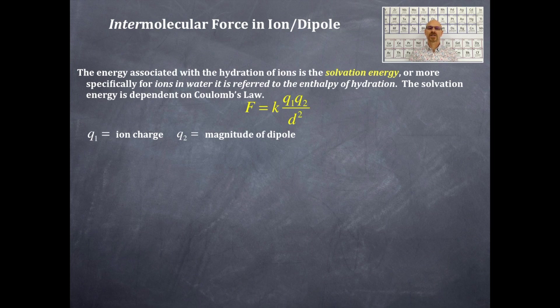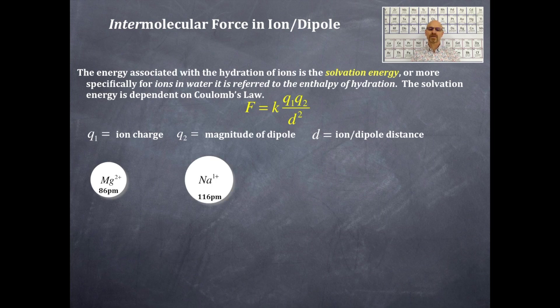Water has a very large dipole. The distance between the ion and the dipole is the D. So let's take a look at this example. We've got a magnesium ion, and that's 86 picometers in size. Then we have a sodium ion, and that's 116 picometers in size.